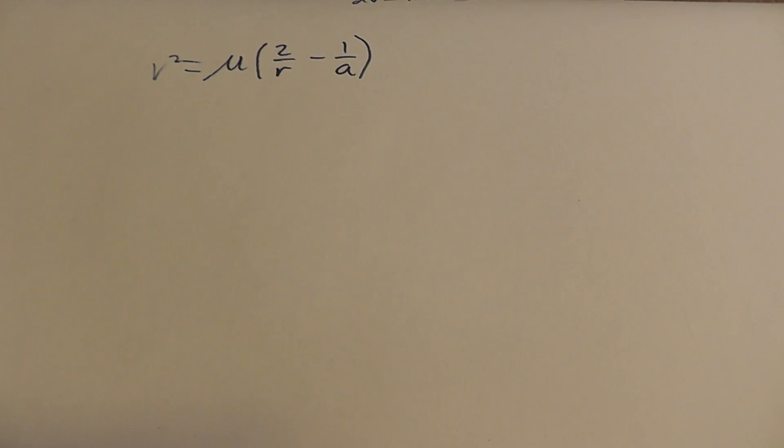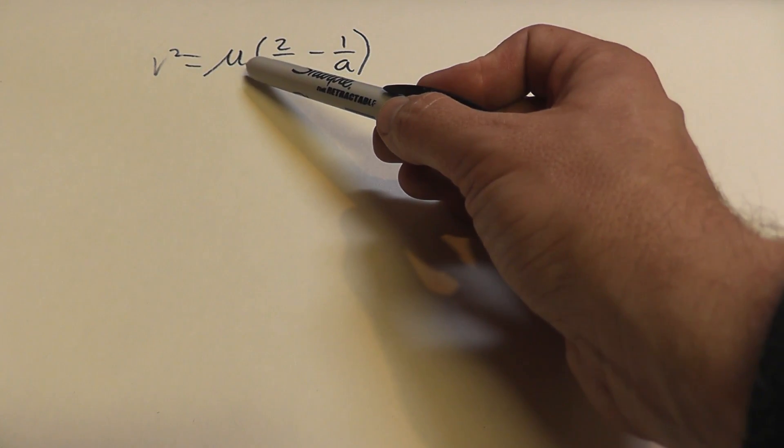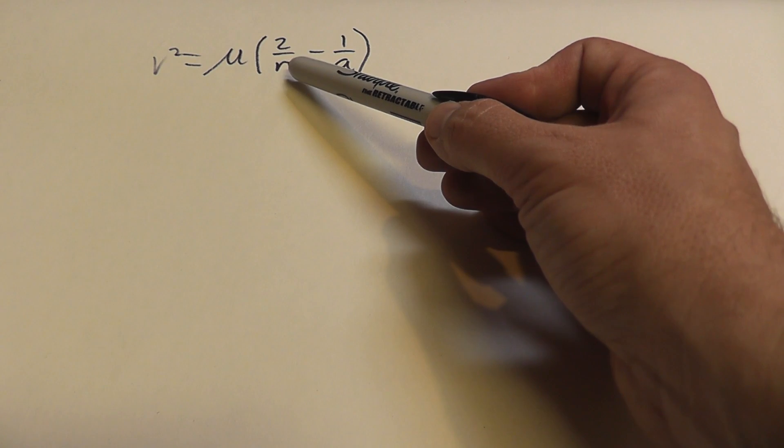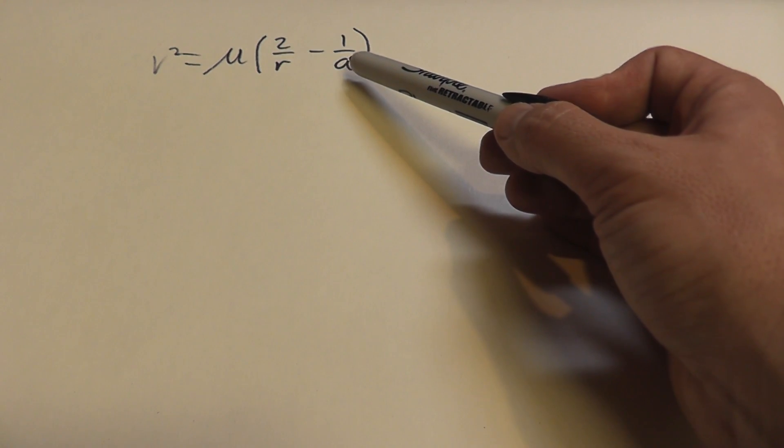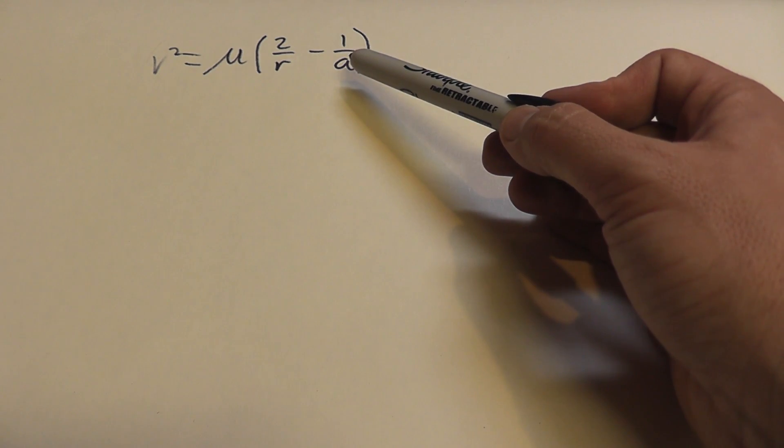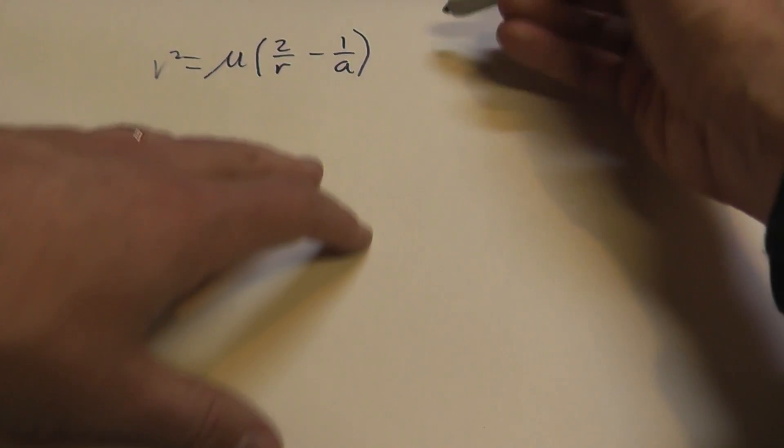It allowed you to calculate the velocity of things in orbit. Mu was the gravitational constant times the mass of the parent body, r was your current distance from the centre of the parent body, and a was the semi-major axis of the orbit, which is the average of the periapsis and the apoapsis.